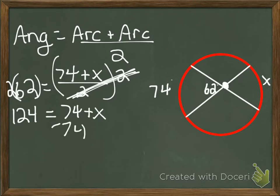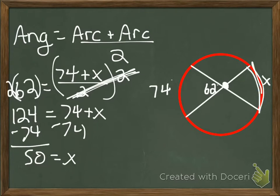Subtract 74 from both sides. That gives me 50. 50 equals x. That means that my arc measure over here is 50 degrees.